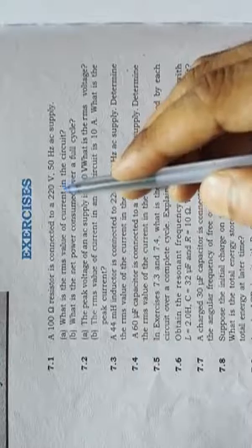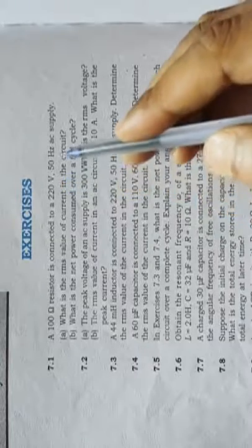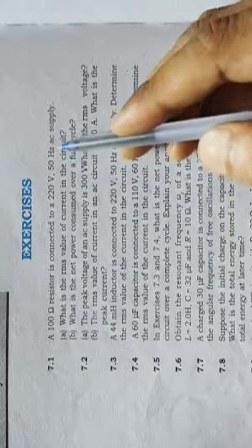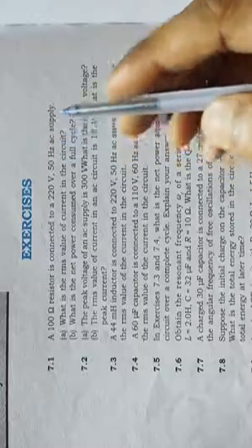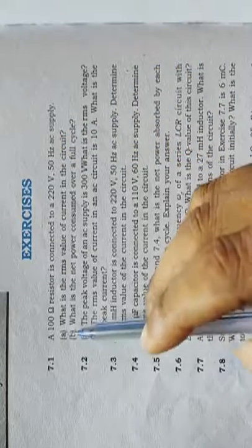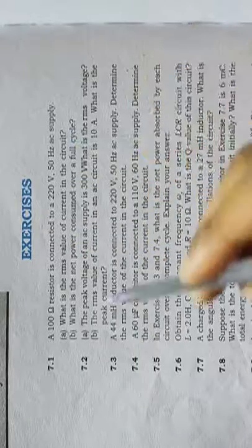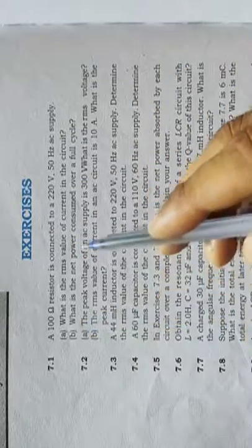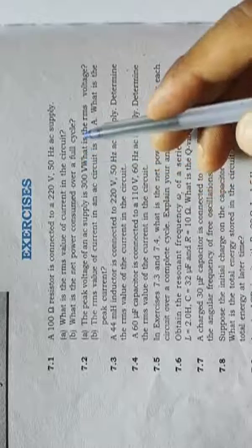A 100 ohm resistor is connected to a 220 volt and 50 hertz AC supply. Part A: What is the RMS value of current in the circuit? Part B: What is the net power consumed over a full cycle?